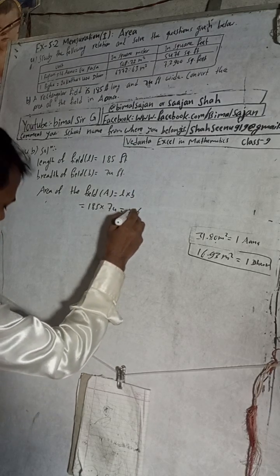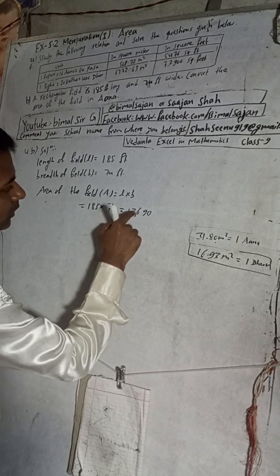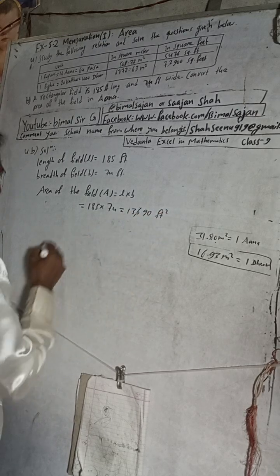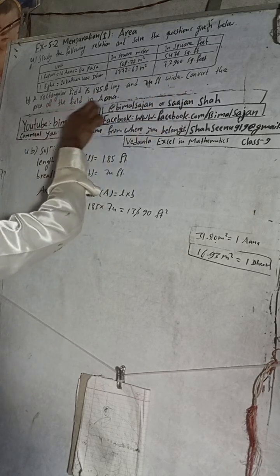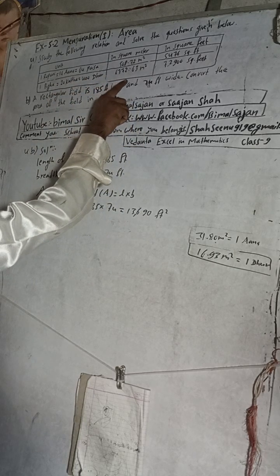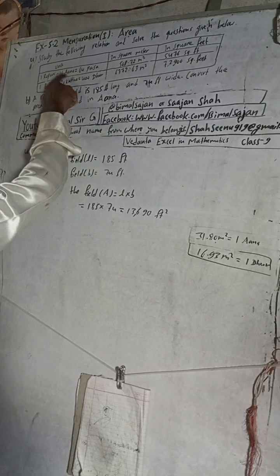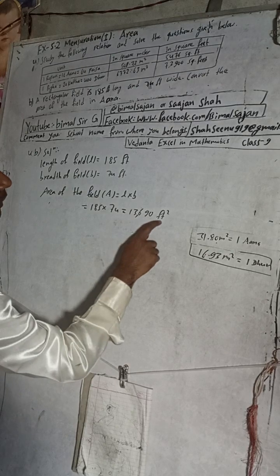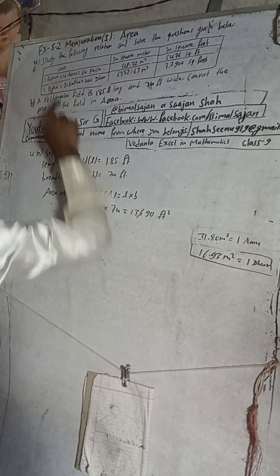That means 13,690 feet square. And now the question is to convert into, convert the area of the feet into ana. We have to see the relation, ana, what is the ana? That means 16 ana is going to this much. So we have to take this value: 5,476 square feet is equal to 16 ana.